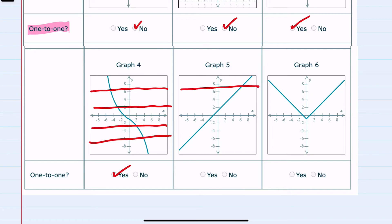Graph five, any number of horizontal lines only crosses once. Yes, that is also one-to-one.